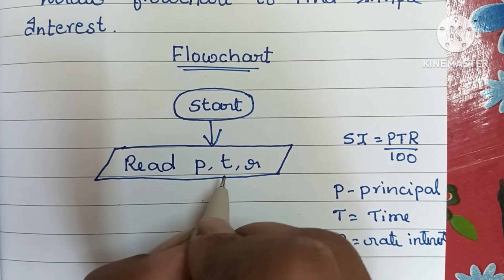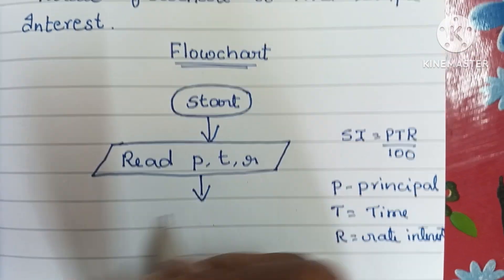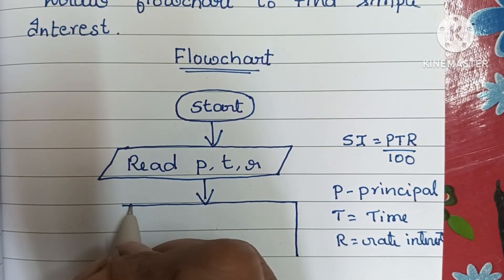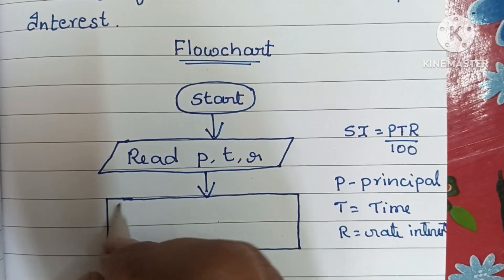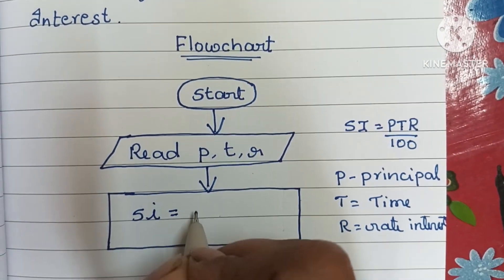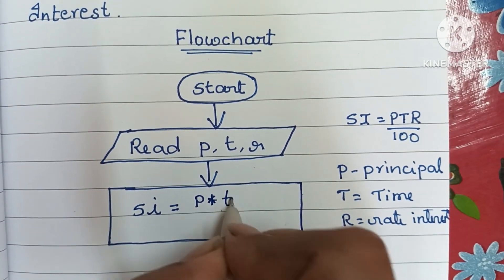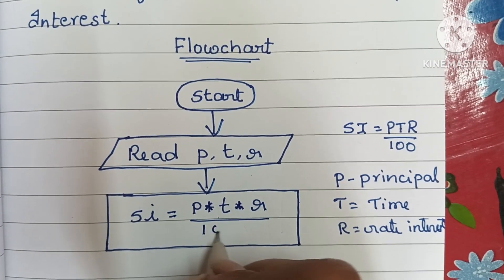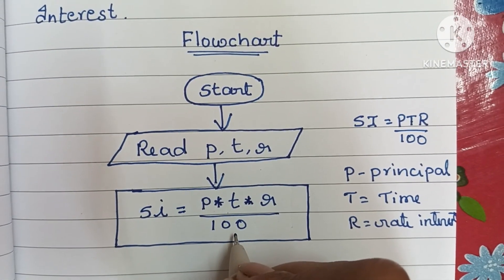Next, we have to draw a rectangular shape. Within that, we write our process. The process is: SI = P × T × R divided by 100.